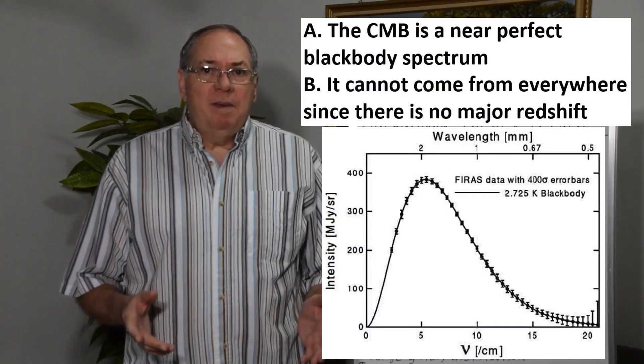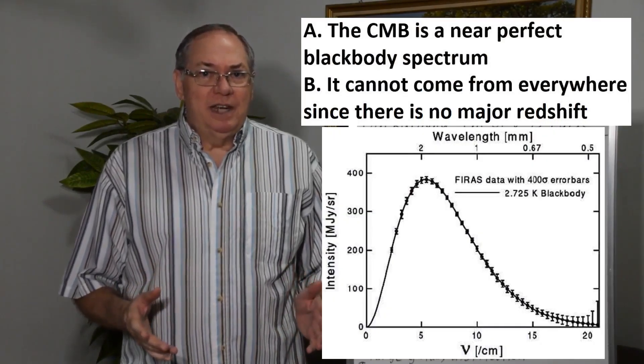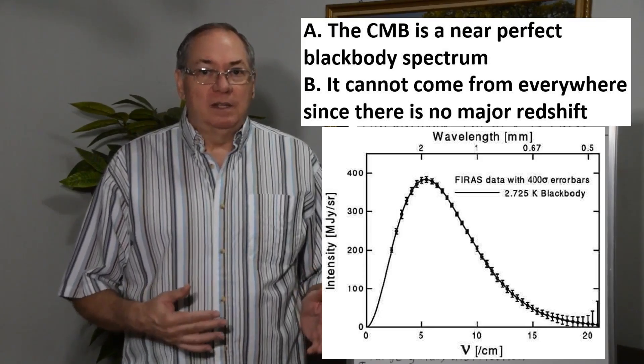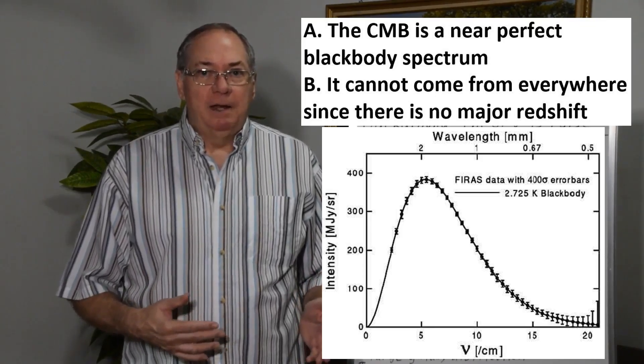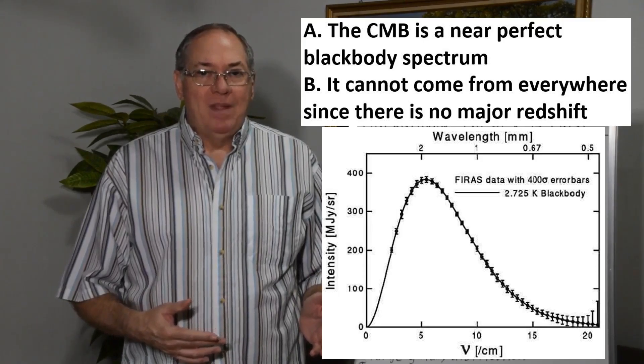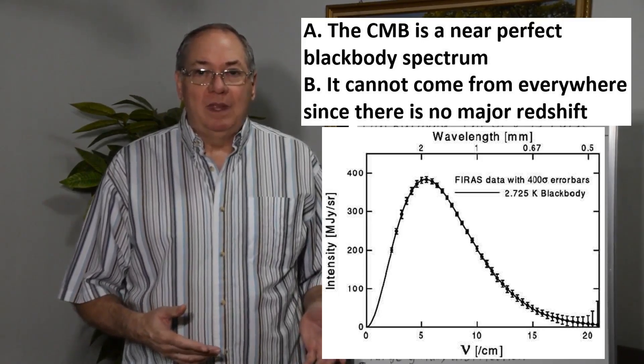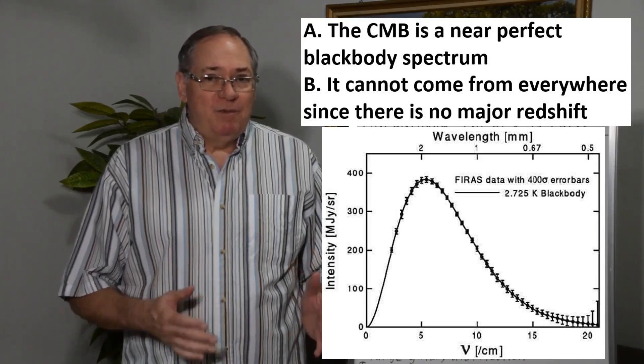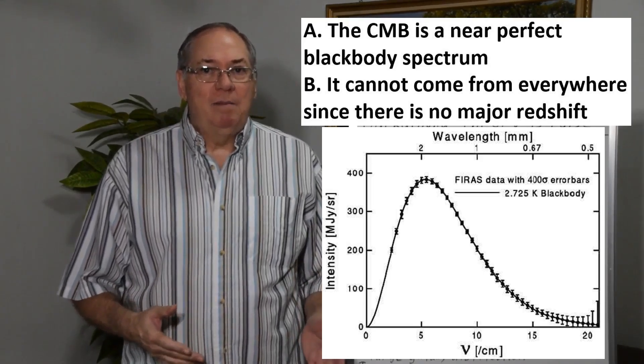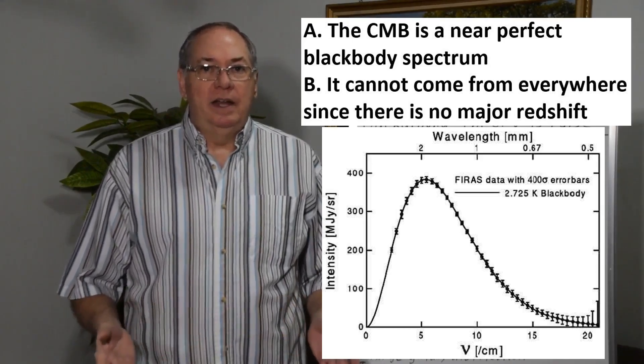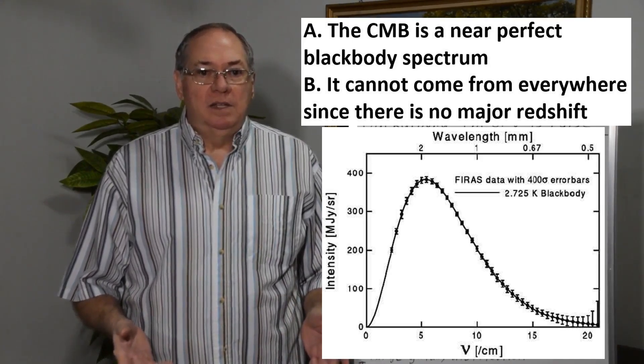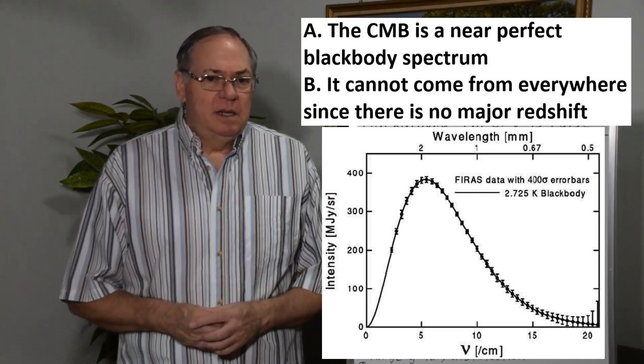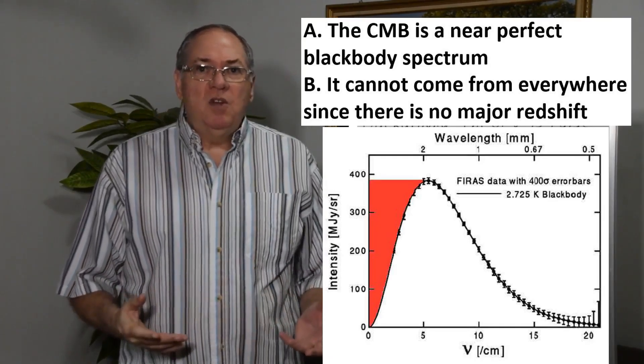So the thing that's really interesting about the Cosmic Microwave Background is that we have this perfect or nearly perfect blackbody radiation spectrum at 2.7 Kelvin. And the perfection of it is really problematic for any theory that you might come up with to deal with Cosmic Microwave Background, any hypothesis, because there's no redshift.